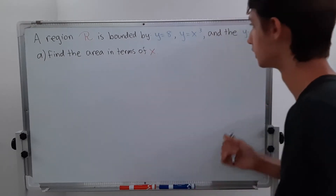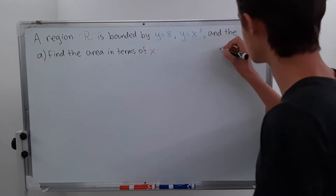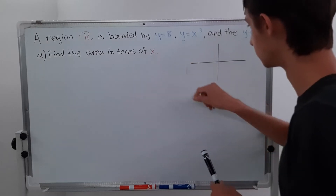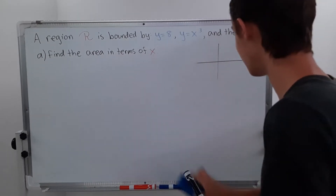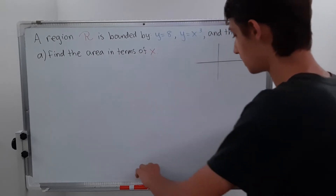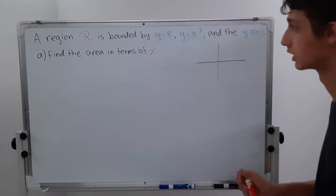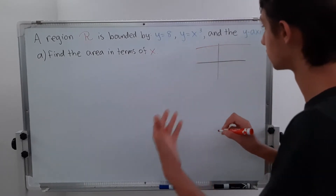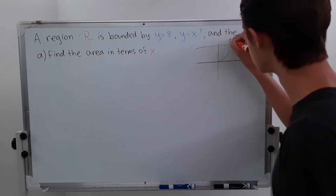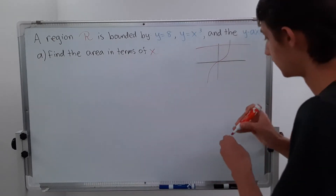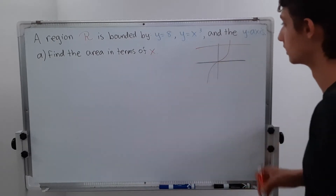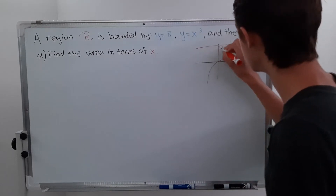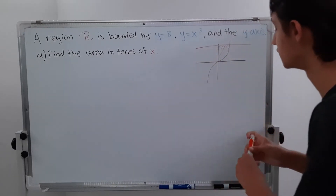I'll draw my axes. Then we can draw a rough sketch of what our shapes look like. So y equals 8 is going to be up here, and then y equals x cubed is going to look like this. The y-axis is obviously this black line here. And so what we're looking at is the stuff in here — that's our shaded region.